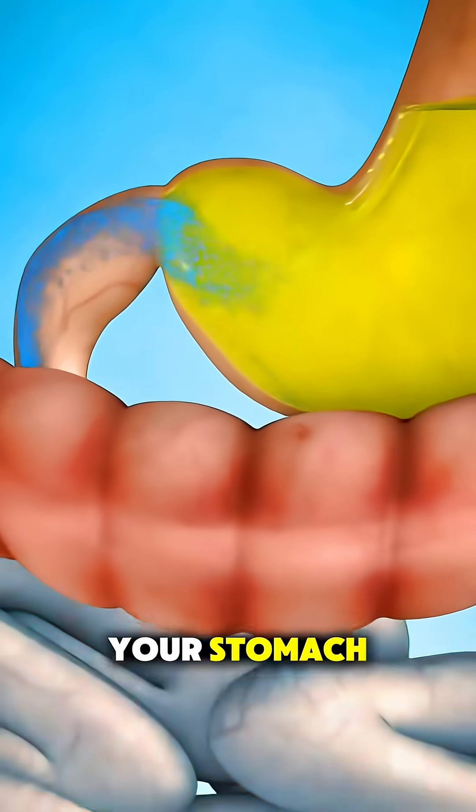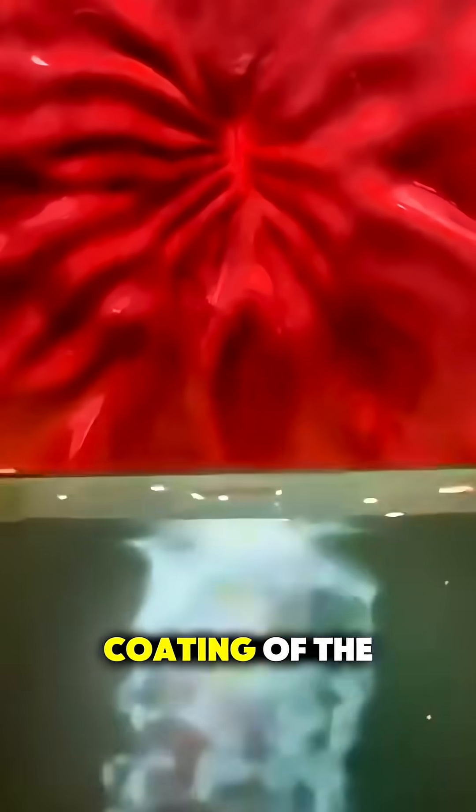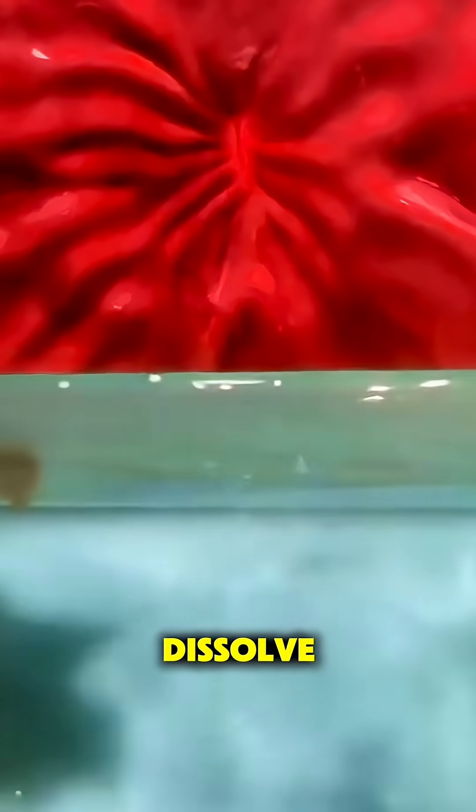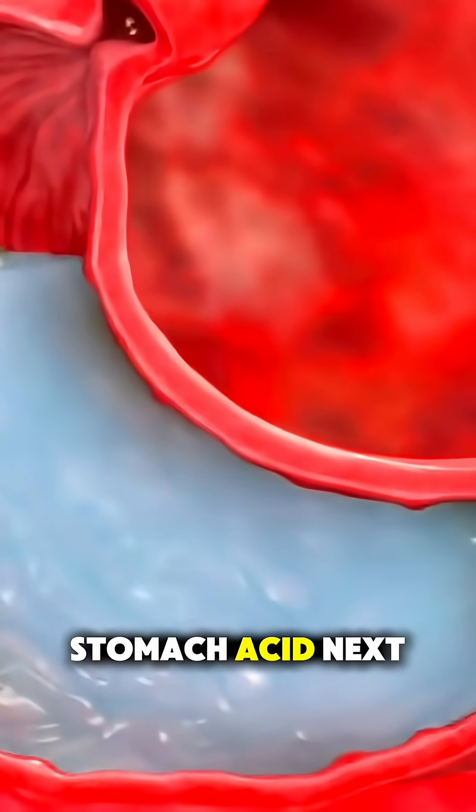Once you swallow the pill, it travels down your esophagus and lands in your stomach. There, the outer coating of the pill starts to dissolve. Depending on the design, it could happen quickly or take time to survive stomach acid.